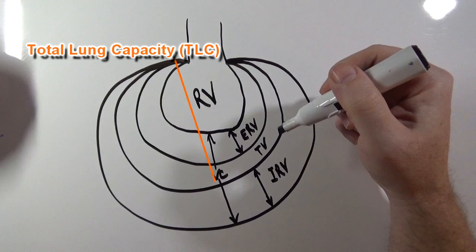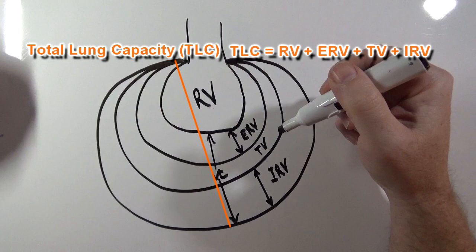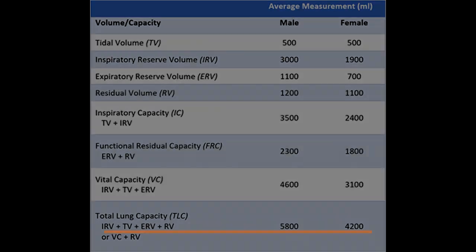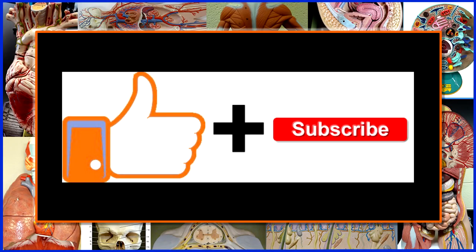Total lung capacity is the sum of residual volume plus expiratory reserve volume plus tidal volume plus inspiratory reserve volume. In other words, total lung capacity equals vital capacity plus residual volume. The average total lung capacity for a male is 5,800 milliliters, and for a female is 4,200 milliliters.